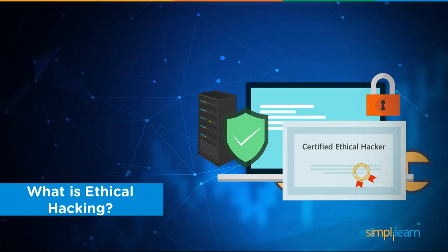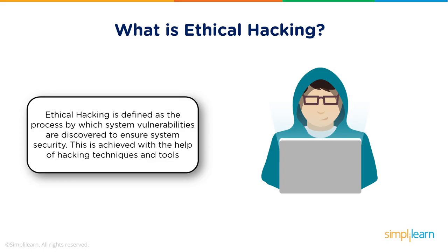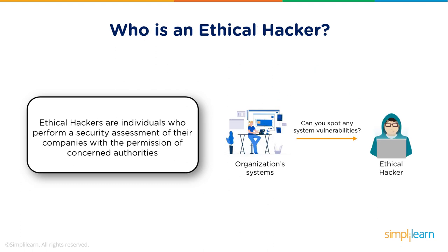So what exactly is ethical hacking? We've identified the black hat hacker as having malicious intent. An ethical hacker does the same activity but in an authorized manner — they sign legal contracts with the organization, which defines a definite scope of what they are and are not allowed to do. They work within that scope, execute test scenarios to identify system vulnerabilities, submit a report to management, and also help management mitigate those weaknesses. They use the same techniques and tools as black hat hackers, but they are authorized and act with the intent of helping the organization.